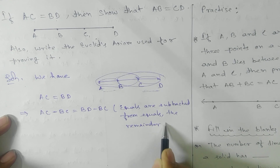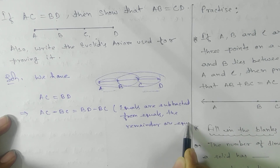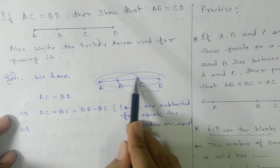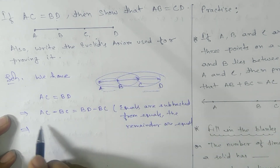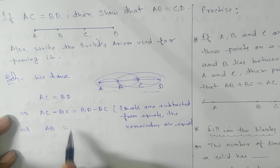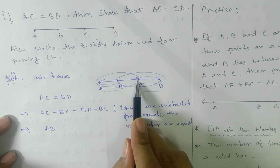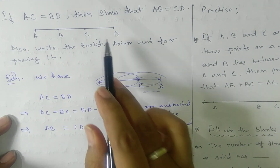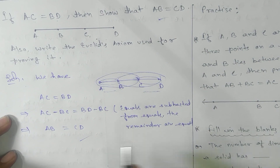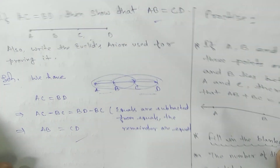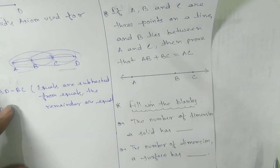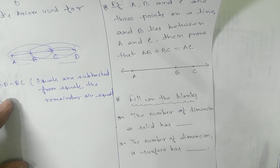That means if we take out the same thing from both sides, the remainders are equal. So from AC, if we take out BC, you get AB; and from BD, if we take out BC, you get CD. This is your proof for the first problem. Here you can see a practice problem — solve it on your own.